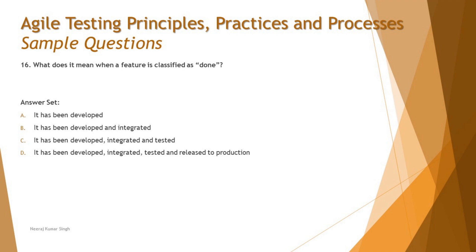So what does it mean when a feature is classified as done? Let's look at the options. Option A says it has been developed — but after development, there are still activities like testing to be performed. Option B says it has been developed and integrated — still not covering all activities. Option C says it has been developed, integrated, and tested — that makes better sense. Let's cross-check with D.